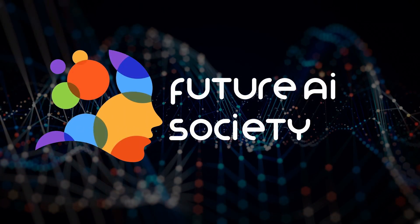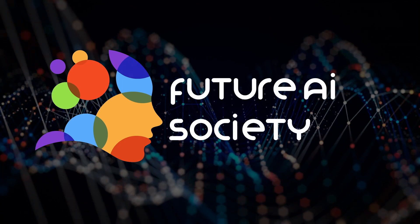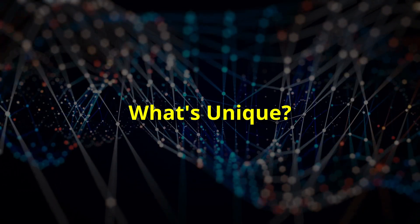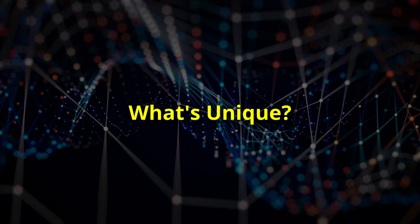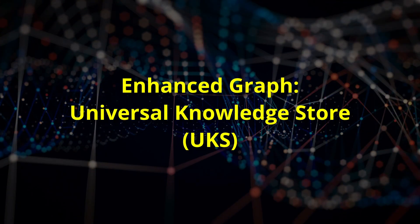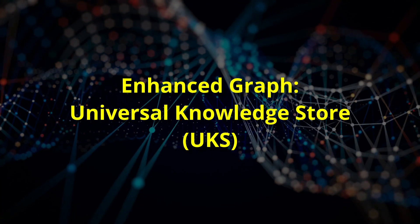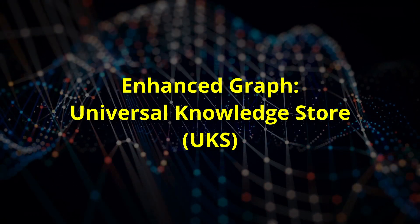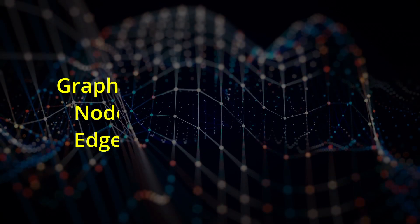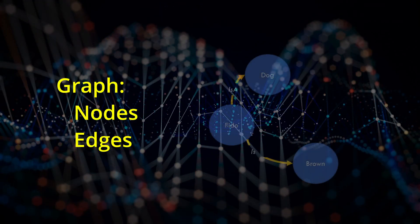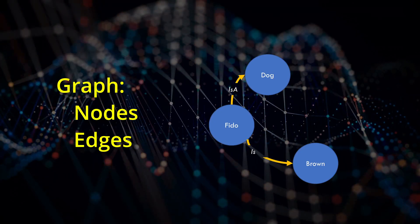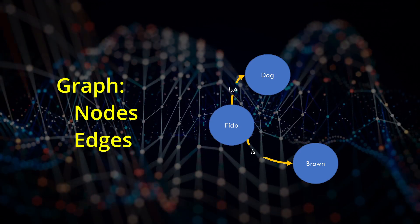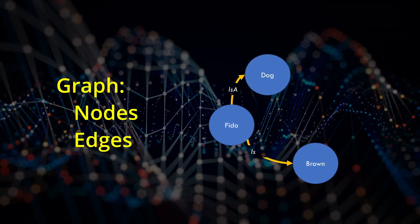I also invite you to join the Future AI Society and participate with ideas or code. So what's unique about this approach? The primary storage in the Brain Simulator 3 is an enhanced knowledge graph called the Universal Knowledge Store, or UKS. Like all graphs, it's a connection of nodes connected by edges, which is how your brain must store similar information. I've made other videos on why this is how the brain must work.